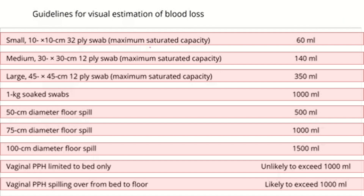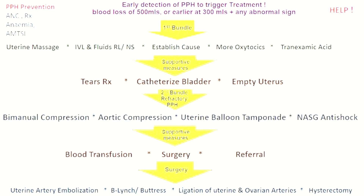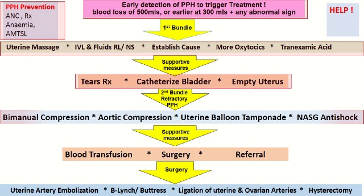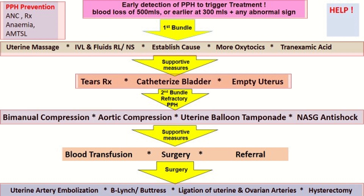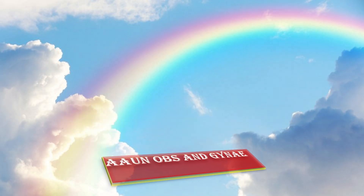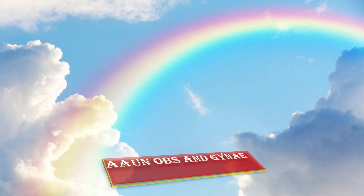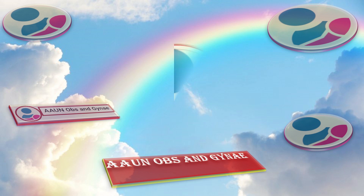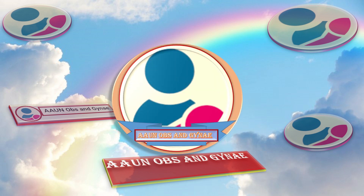This is the algorithm for management of PPH, starting from PPH prevention through to surgical management. We follow this algorithm using bundle approaches for management. Thank you — that covers the different methods of blood loss estimation along with the PPH algorithm. Please subscribe to Obs and Gynae, and if you have any queries, write them in the comment section.